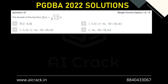Hi everyone, let's solve question number 37. The domain of the function f(x) equals the square root of (1 minus |x|) divided by (2 minus |x|). It's a very standard question. This is our function: square root of (1 minus |x|) over (2 minus |x|), and I'll do certain modifications to simplify the function.